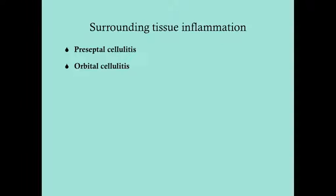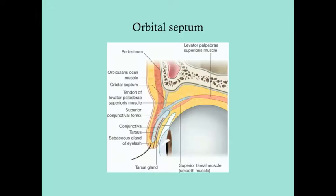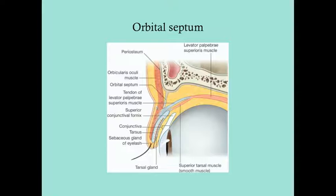We're going to talk about preseptal and orbital cellulitis, and you need to understand the difference between the two. Looking at this anatomy, the key structure is the orbital septum — a thin fibrous tissue that extends from the orbital periosteum down to the anterior portion of the tarsus and eyelid. The orbital septum confines preseptal cellulitis from extending into the orbital cavity, which is why preseptal cellulitis is not as severe as orbital cellulitis.